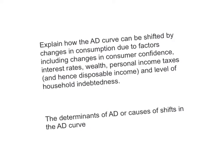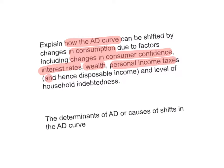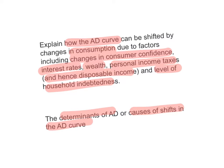The learning outcome for this video is to explain how the aggregate demand curve can be shifted by changes in consumption due to factors that include changes in consumer confidence, interest rates, wealth, personal income taxes and hence disposable income, and the level of household indebtedness. We're looking at the determinants of aggregate demand, or the causes of shifts in the AD curve.